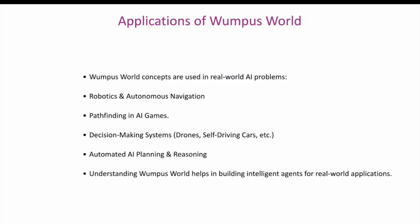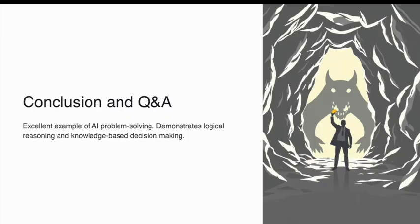Applications of Wumpus World: Wumpus World concepts are used in real-world AI problems, including robotics and autonomous navigation, pathfinding in AI games, decision-making systems such as drones and self-driving cars, and automated AI planning and reasoning. Understanding Wumpus World helps in building intelligent agents for real-world applications. Conclusion: Wumpus World is an excellent example of AI problem solving, demonstrating logical reasoning and knowledge-based decision-making.